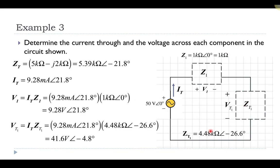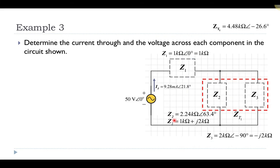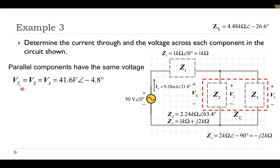Going back to my previous circuit, Z_total1 was equivalent to impedance values connected in parallel. The current from the source passes through Z1, reaches the junction, and then splits between Z2 and Z3. Because these are connected in parallel, the voltage across Z2 and the voltage across Z3 must be equal to each other and equal to the voltage across the total equivalent impedance. So V_total1 equals V2 equals V3, which we found to be 41.6 volts at an angle of minus 4.8 degrees.